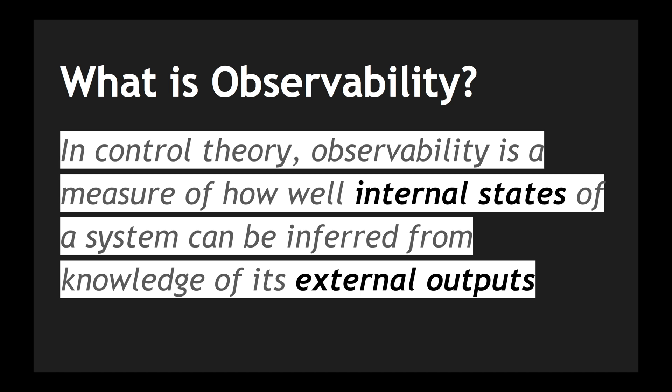So now looking at the definition again, there are two terms we need to understand: the internal states and the external output. Internal states are the ones maintained within your process which are not exposed outside. However, you need to make sure what can be exposed and what cannot, so that the external outputs define what your internal state is. We go to a doctor only when there is a symptom — that symptom is the external output. There is an internal problem because of which the symptom was exposed, and that's the internal state. If there is a problem within an application, you're going to see that as an external output while your internal state decides it — that's what observability is all about.